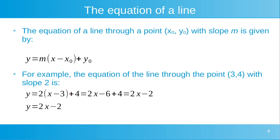Now to revise what the equation of a line is. The equation of a line through a point x0, y0, with a slope m, is given by: y is equal to m into x minus x0, plus y0. For example, the equation of the line through the point (3, 4) with slope 2 can be calculated as follows. Our value of slope m is equal to 2, x0 is equal to 3, and y0 is equal to 4. When we substitute these values in, we get y is equal to 2 into x minus 3, plus 4.